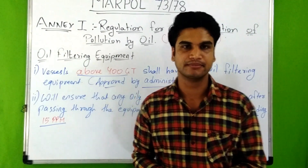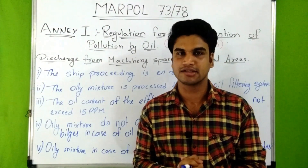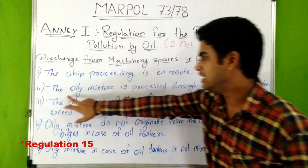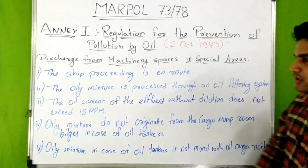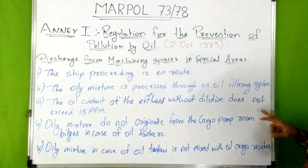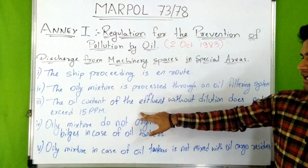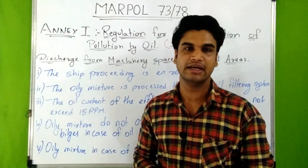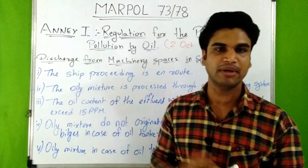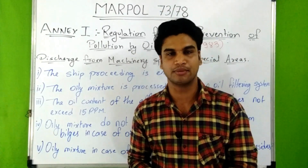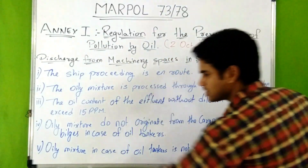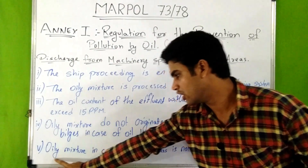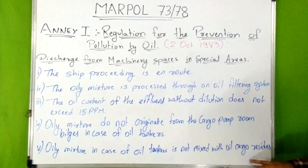Discharge criteria within special areas are: the ship must be proceeding en route; the oily mixture must be processed through an oil filtering system; the oil content of the effluent without dilution must not exceed 15 ppm; an alarm system must indicate when oil content exceeds 15 ppm with automatic discharge stop; the oily mixture must not originate from cargo pump room bilges; and in the case of oil tankers, the oily mixture must not be mixed with oil cargo residues.